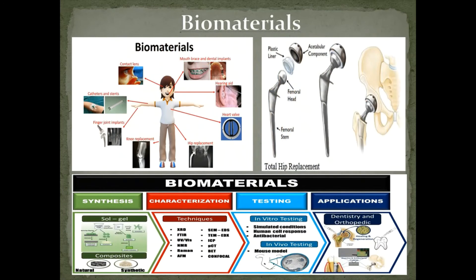The next specialization is biomaterials. This is the use of both living tissues and artificial materials for the purpose of implantation. It is any matter, surface, or construct that interacts with living systems. The study of biomaterials is called biomaterials science or biomaterials engineering, and it has experienced steady and strong growth over its history, with many companies investing large amounts of money into the development of new products.